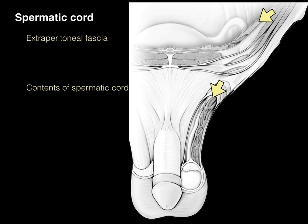The extraperitoneal fascia and the contents of the spermatic cord are in the same fascial plane. The contents include: the ductus deferens, outlined in yellow — also called the vas deferens, though 'vas' means vessel and this is not a vessel, so ductus deferens is the better term. The ductus deferens transports sperm during ejaculation from the testis, up through the spermatic cord, through the inguinal canal, then to the ejaculatory duct in the prostate gland, and out through the urethra. It has a very thick smooth muscle wall to move sperm rapidly.